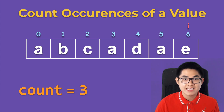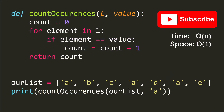We know that the letter A occurred three times in this array. Let's take a look at the code in Python. Here is our list. We're going to call the method count occurrences, pass in our list, and we want to count the number of times the letter A occurred inside the list. Here is our method — we take in the list and then the value that we want to count. The first step is to set count equal to zero and we traverse through the list.